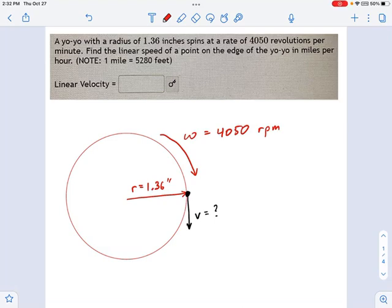We have a yo-yo that's spinning at 4,050 revolutions per minute, and it has a radius of 1.36 inches. I've drawn those two bits of information right here, and what we're going to do with those is figure out the linear speed of a point on the edge of the yo-yo.